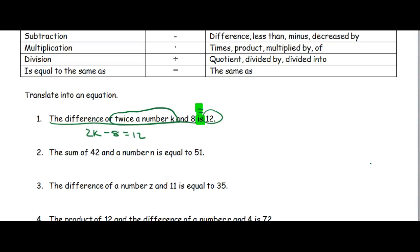Number 2, the sum of 42 and a number n is equal to 51. So here, is equal to tells us to put the equal sign here. And when we translate the left side, the sum of 42 and a number n, well, sum tells us addition. 42 and n means we write it in the order we're given. So 42 plus n is equal to, and what's it equal to? 51.